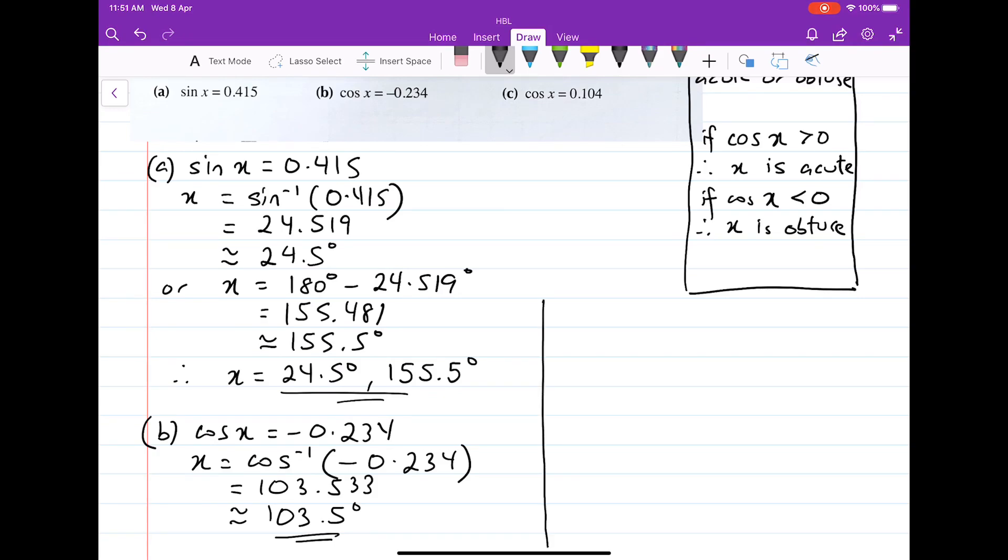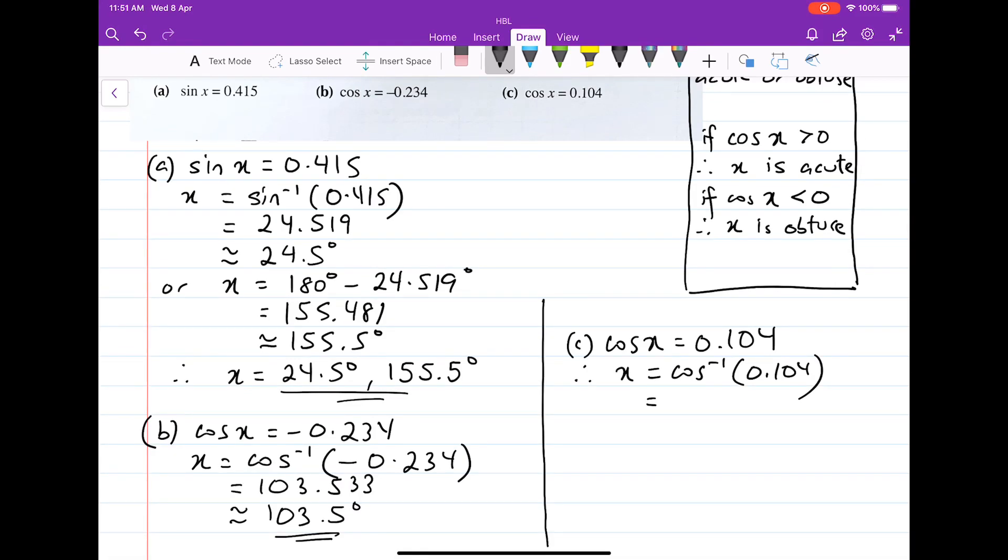And finally, for part C, cosine x equals 0.104. In this case here, since the cosine of x is positive, therefore x equals, just take the whole thing, 0.104, and you will get the value of 84.030, which is approximately equals to 84.0 degrees.